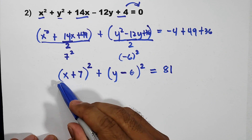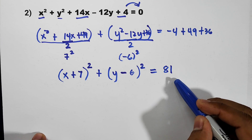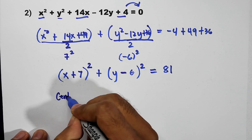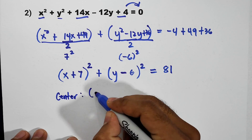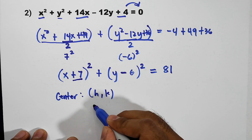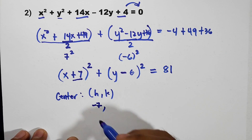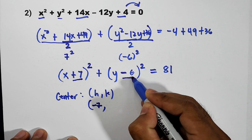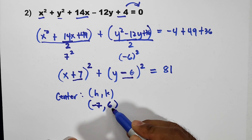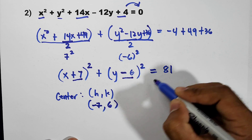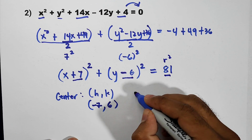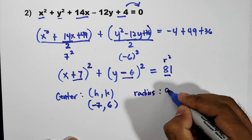We can now identify the center of the circle using the center-radius form. The center is h, k. Here h is the additive inverse of positive 7, that is negative 7. The additive inverse of negative 6 is positive 6. Therefore the center is negative 7, 6. The radius: since r squared equals 81, the square root of 81 is 9, so the radius equals 9.